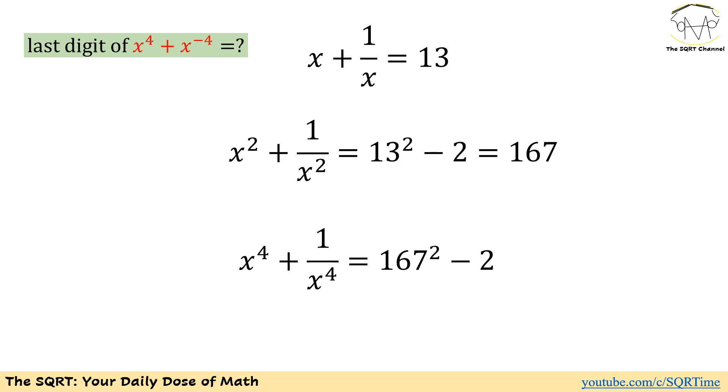From here we take another power of 2. We will end up with x to the power of 4 plus 1 over x to the power of 4 equals to 167 squared minus 2.